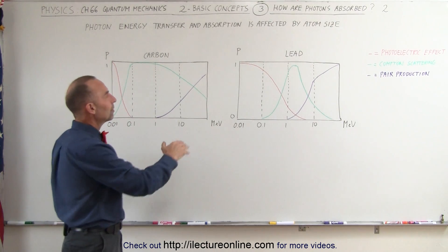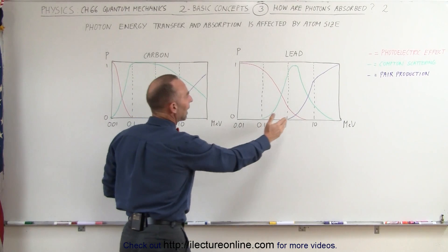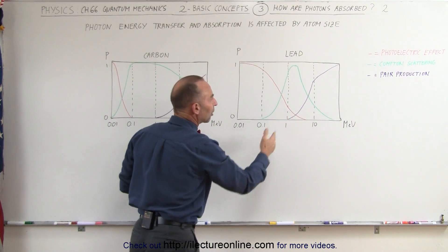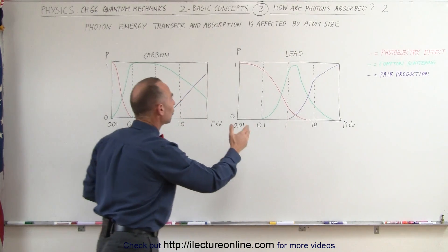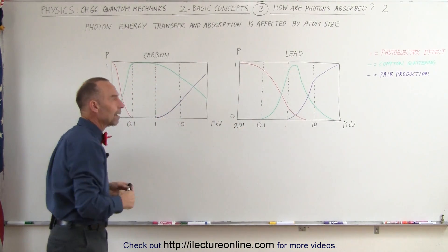And then finally when we get to the pair production you can see that with heavier nuclei pair production occurs at greater probability at lower energy levels with large nuclei versus smaller nuclei.